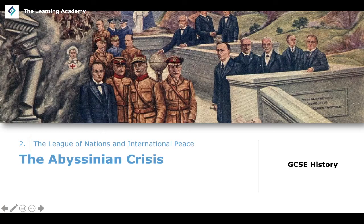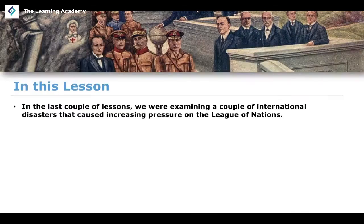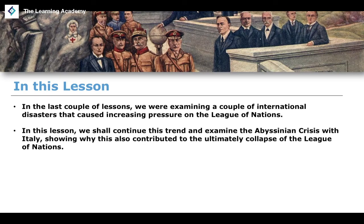Just like with the Manchurian crisis in the last lesson, what we're going to do in this lesson is talk about another major international crisis that took place — this one being the Abyssinian crisis, or the Italian invasion of Abyssinia. We've been examining in the last few lessons a couple of international disasters that have been increasing the pressure on the League of Nations into the early 1930s, including the Great Depression and the Manchurian crisis.